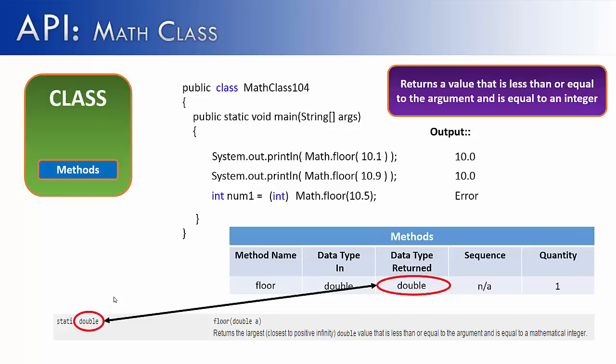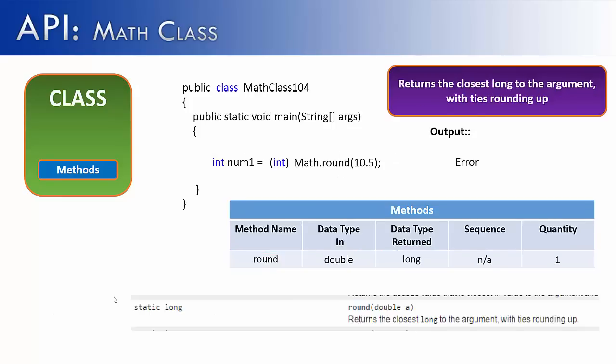The same thing is true for the round method. I know that the round method is not returning an integer value, but rather it is returning a long. And if I don't have this typecast here, it is going to cause an error, because I can't take a long value and smush it into an integer.